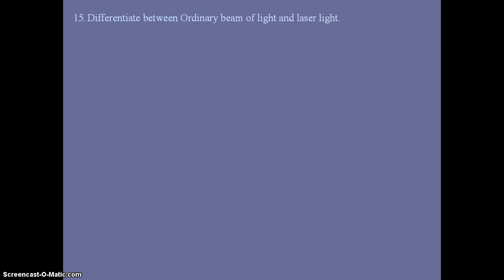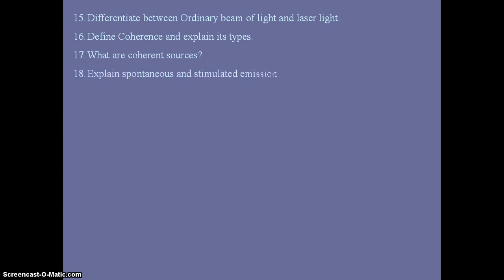More questions from the laser chapter: differentiate between ordinary beam of light and laser light — three marks. Define coherence and explain its types — temporal coherence and spatial coherence — two to four marks. What are coherent sources — two marks. Explain spontaneous and stimulated emission — four to six marks.